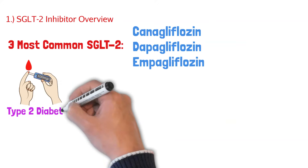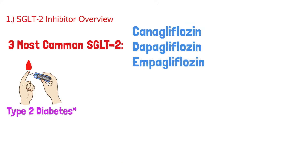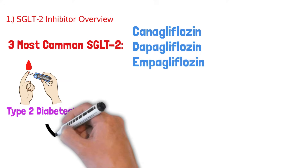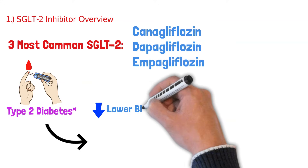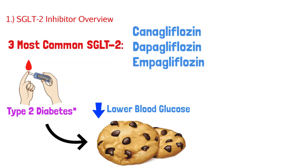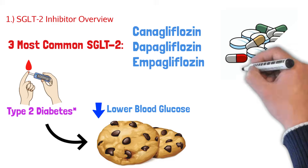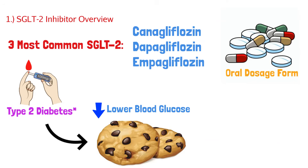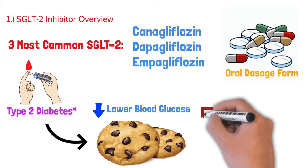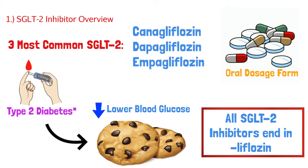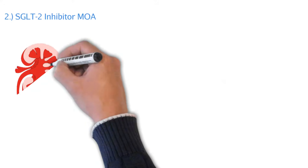These medications are typically used to treat type 2 diabetes — that's the primary function. The goal is to lower blood glucose in this patient population. When talking about diabetes medication management, we need to know which medications are oral and which are injectable. These SGLT2 inhibitors are oral medications. Also, as you probably noticed, all of these SGLT2 inhibitors end in '-liflozin,' which is a good way to remember the pharmacology side of these medications.